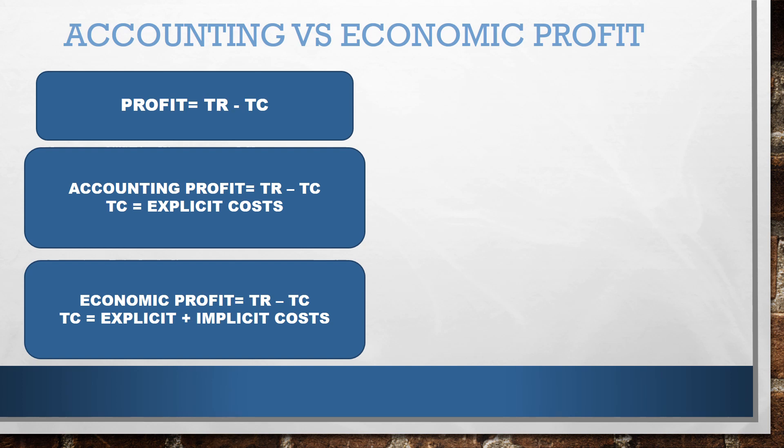Accountants just look at explicit cost in total cost, whereas economists compute profit with some difference. The formula is the same, but in total cost, economists sum up both explicit and implicit costs.